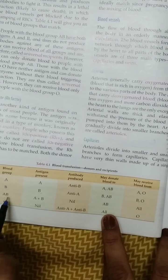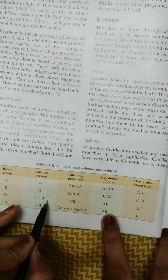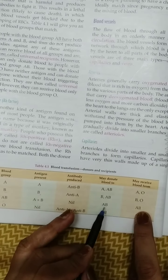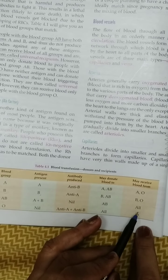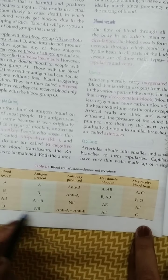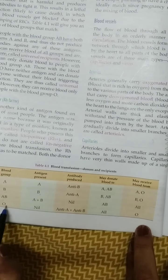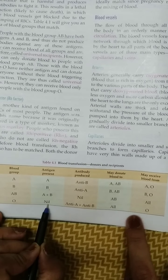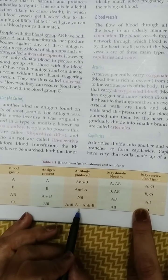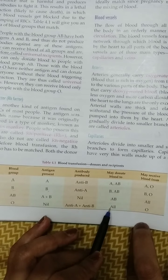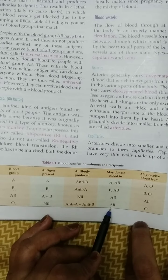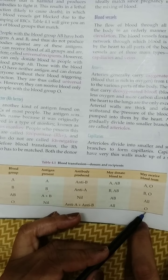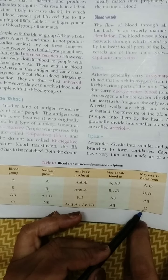A person having blood group AB has both antigens present and no antibody. They may donate blood only to AB, but may receive blood from all the other blood groups. A person having blood group O has none of the antigens present, but both antibodies are present. So they may donate blood to all blood groups, but may receive blood only from a person having blood group O.